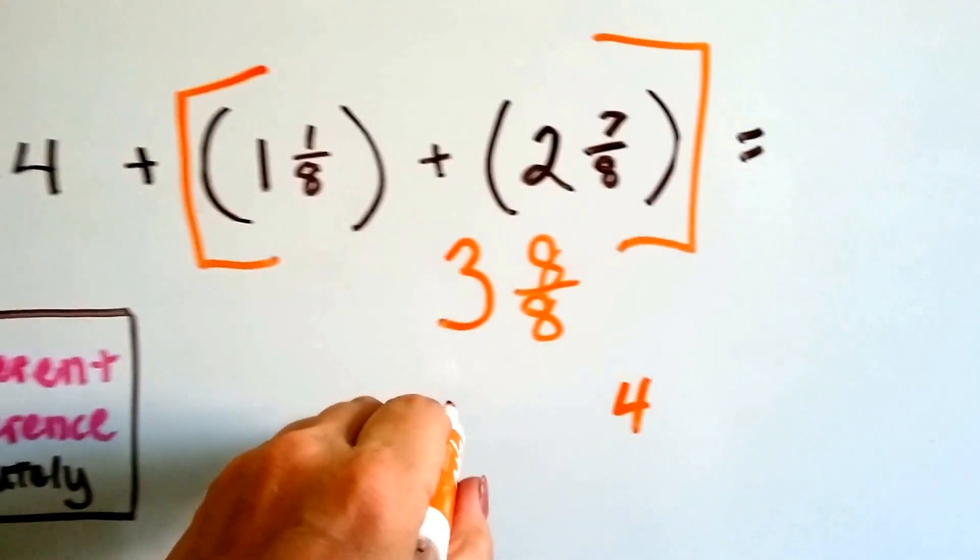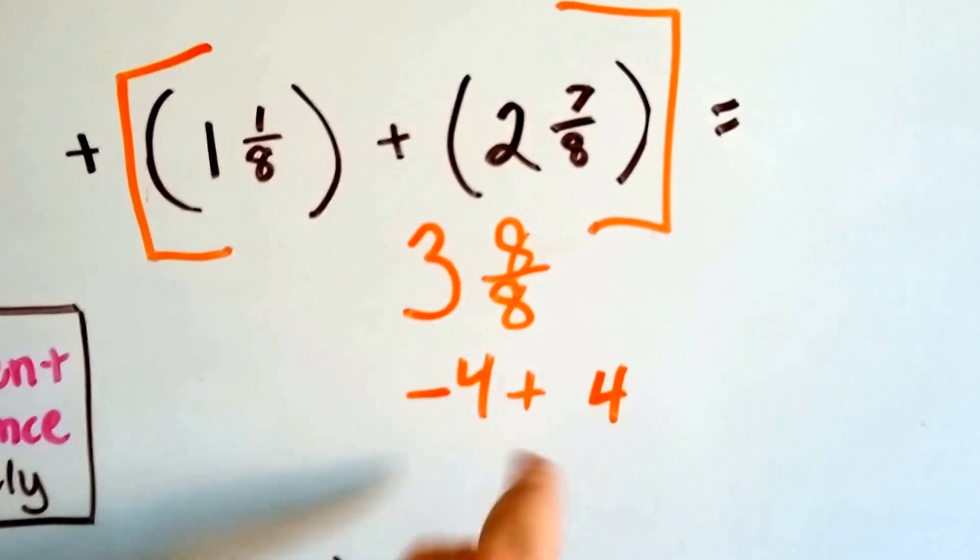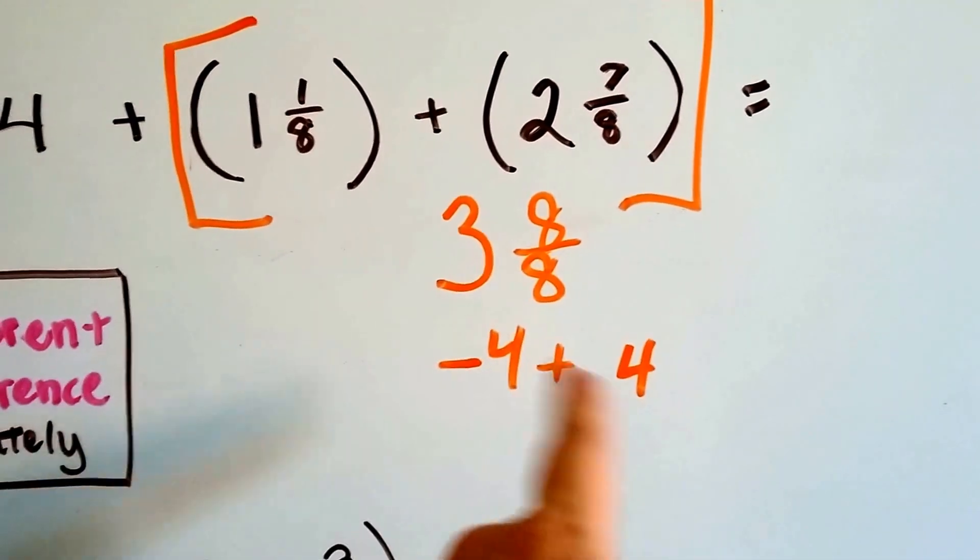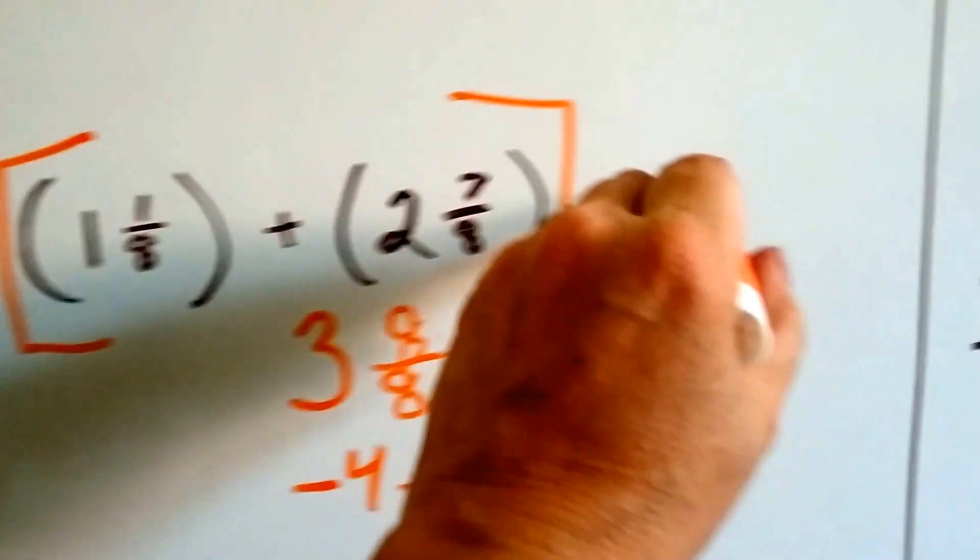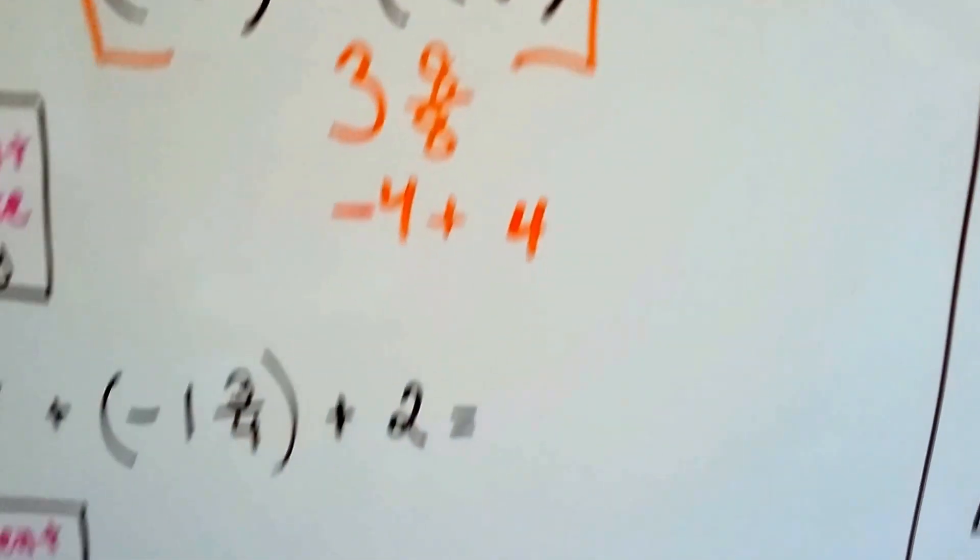Now we have to add this negative 4. So we have negative 4 plus 4. And that's additive inverse, isn't it? They created a zero pair. So the answer's zero. How about this one?